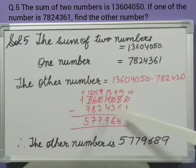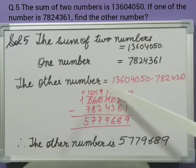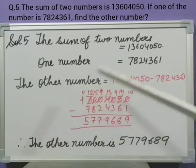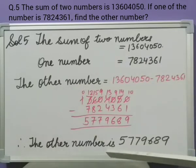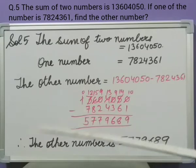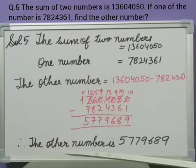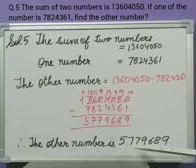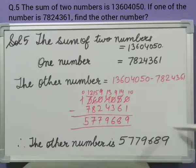Here we have subtracted by following the rules of 1s, 10s, 100s, 1000s, 10,000s, lakhs, 10 lakhs, and crores. After getting the subtraction done, we got the answer. Therefore, the other number is 57,79,689.